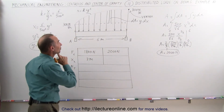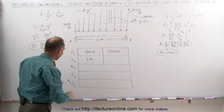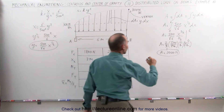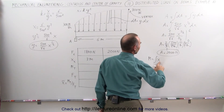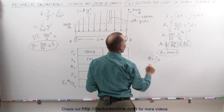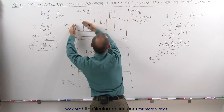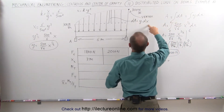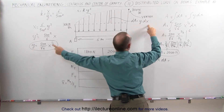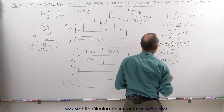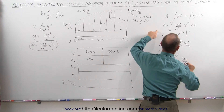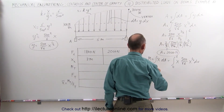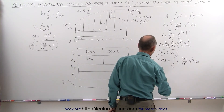Now we need to find the x-coordinate of the centroid of the curved portion. To find the x-coordinate, we compute the total moment divided by the total force. The moment equals the integral of the x-coordinate times dA. Since dA equals y dx, and y equals 500 divided by the square root of 6 times x to the one-half power, the moment equals the integral from 0 to 6 of x times 500 divided by the square root of 6 times x to the one-half dx. This simplifies to 500 divided by the square root of 6 times the integral of x to the three-halves power from 0 to 6.